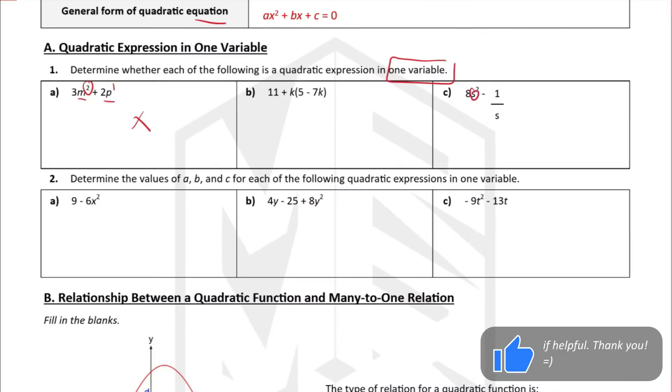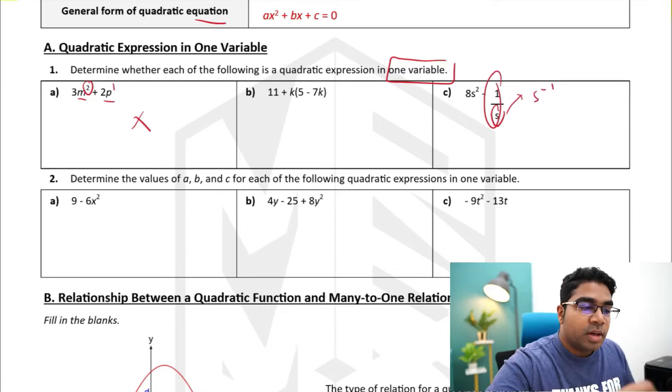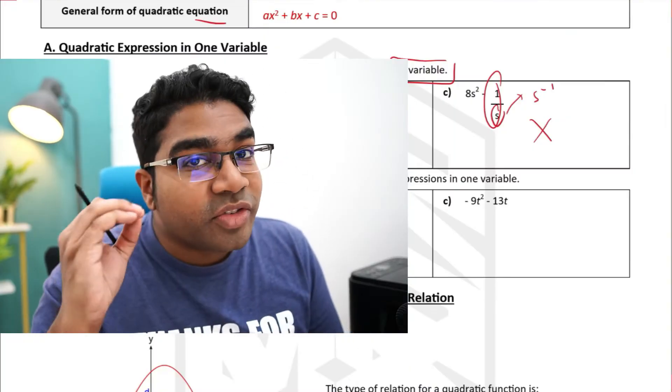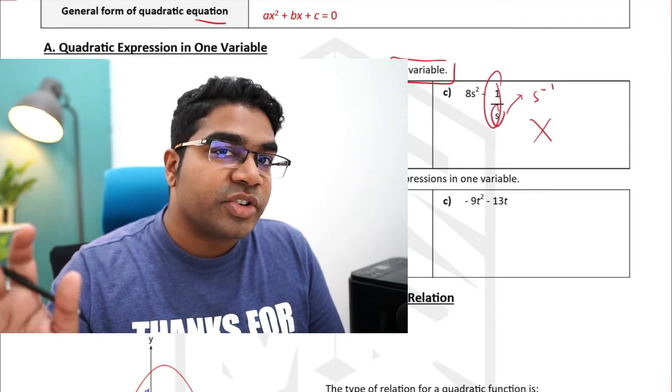Let's take a look at example c. Here we have only one variable, s, and the highest power is 2. However, this variable has a negative power because the whole thing can be written as s to the power of negative 1. Therefore, this is not a quadratic expression. I recommend using the Desmos calculator or any graphing calculator to check — you will see it is indeed not a quadratic expression.